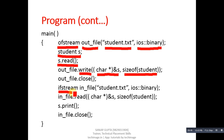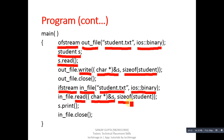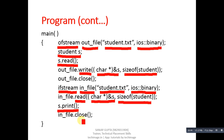Now ifstream creates object infile and opens student.txt in read mode along with binary mode. Then infile.read is used — where earlier we used the write function, now we use read. The read function reads information into the s object. The sizeof(student) argument specifies how many bytes to read from the file. The information is stored inside s, then s.print displays the information on console, and infile.close closes the open file.